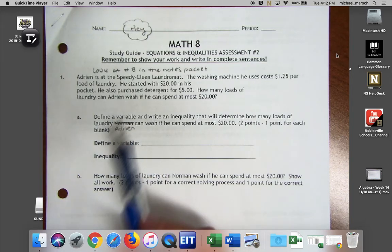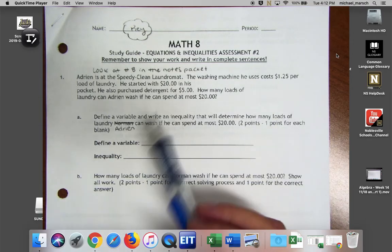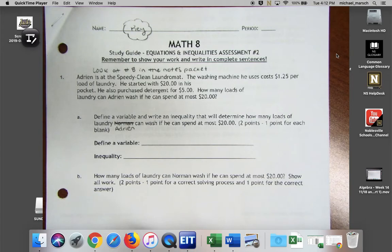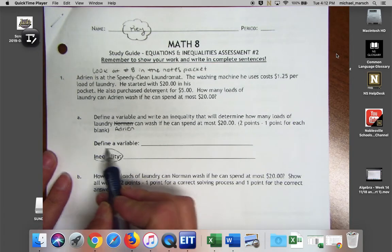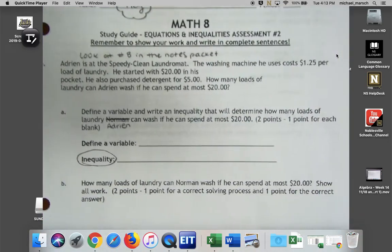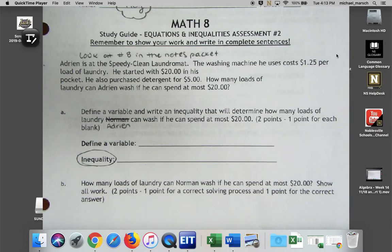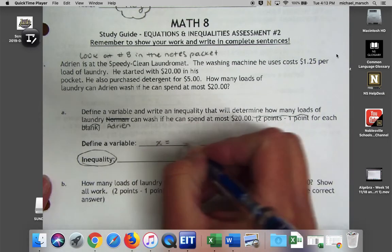We have Adrian here at the Speedy Clean Laundromat. The washing machine uses $1.25 per load of laundry. He starts with $20 in his pocket. He also purchased detergent for $5. How many loads of laundry can Adrian wash if he can spend at most $20? Notice that this one says inequality here, so make sure you're paying really close attention to what's being asked for you to do between an inequality or an equation.